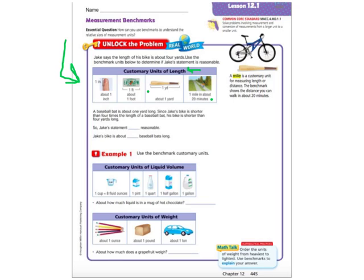Let's look at this problem. It says Jake says that the length of his bike is about four yards. Here's his bike, and we want to see if it's about four yards. We want to see if his statement is reasonable or not. We know from this that it says a yard is about how long a baseball bat will be from end to end.